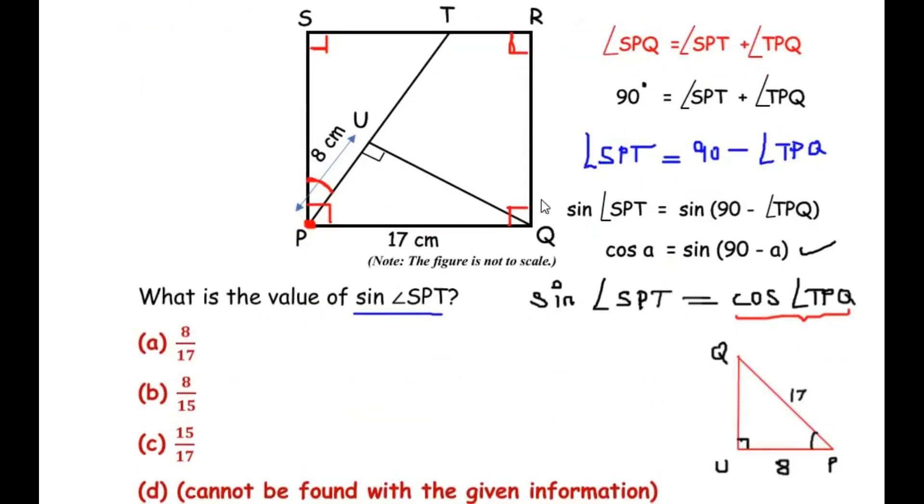So here you can see I have redrawn the right angle triangle. The right angle is at point U. Opposite to angle U is your hypotenuse which is PQ. Here we have written PQ as 17 centimeters, and UP is going to be 8 centimeters.